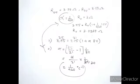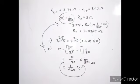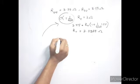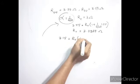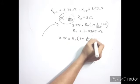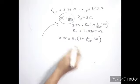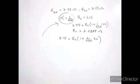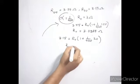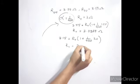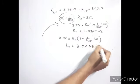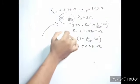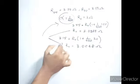Checking with the 20 degrees Celsius case: R₀ equals 3.15 times 1 over 1 plus 1 by 420 times 20, giving R₀ approximately 3.0068 ohms. These two values of R₀ are different from each other — which is not acceptable.